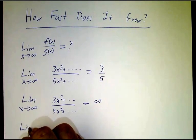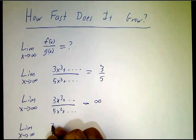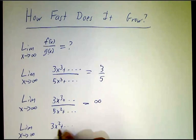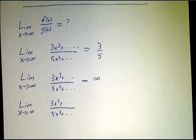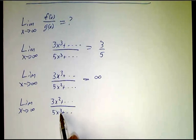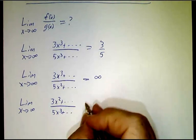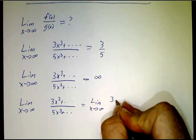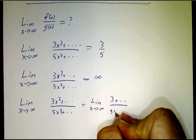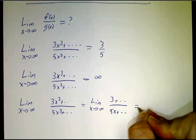But if you have the limit of 3x² plus stuff divided by 5x³, then the bottom is growing faster. After you cancel out the x²s, you get the limit of 3 plus stuff over 5x plus stuff, and that's going to be zero.